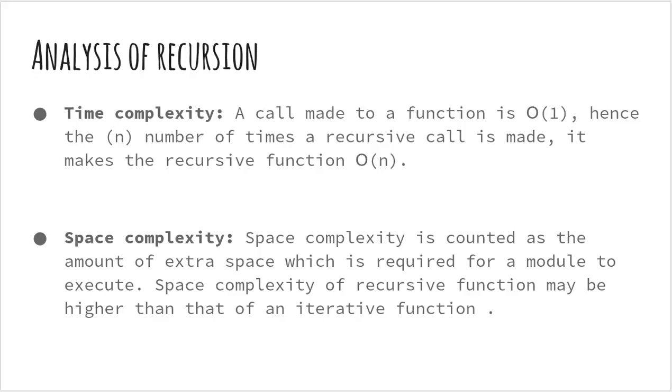Time complexity. In case of iterations, we take the number of iterations to count the time complexity. Likewise, in the case of recursion, assuming everything is constant, we try to figure out the number of times recursive calls are being made. A call made to a function is constant time. Hence, if a recursive call is made n times, this makes a recursive function O(n).